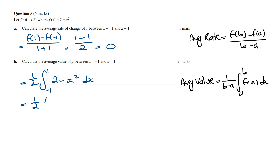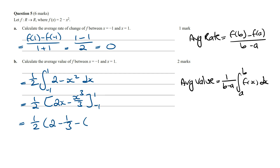Integrating this is going to become a half times 2x minus x cubed on 3, from minus 1 to 1. Subbing in the terminals we get 1 over 2 times 2 times 1 which is 2, minus 1 cubed on 3 which is 1 on 3, and then minus 2 times minus 1 which is minus 2, and then minus minus 1 cubed on 3 which is plus 1 on 3.